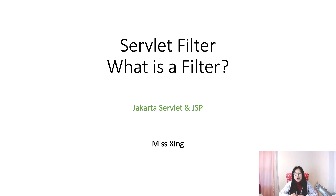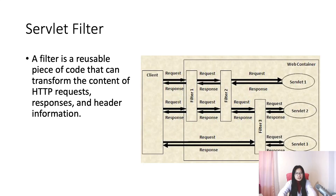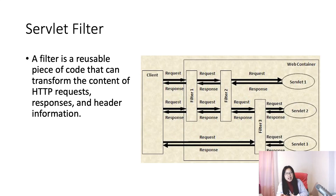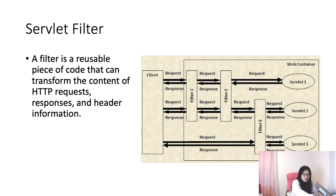In this video, I want to introduce what is a filter, and also answer why a filter can help us with the issues we encountered. A filter is a useful piece of code — you can think of a filter as a Java object, because eventually the container will create this object for us. And it can transform the content of HTTP requests, responses, and header information. I copied this sentence from the Jakarta EE specification.